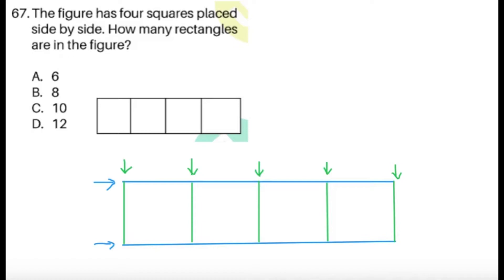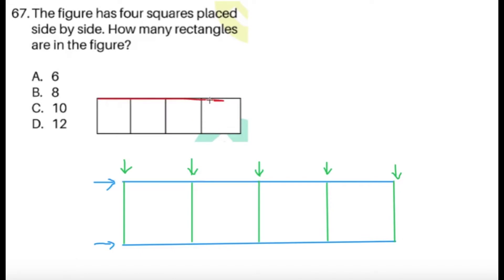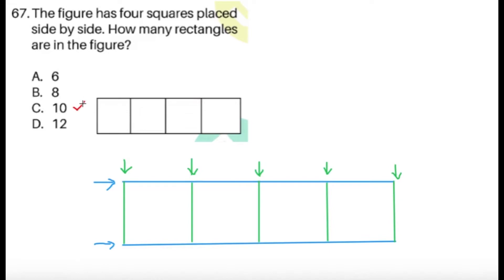Next, question 67. The figure has four squares placed side by side. How many rectangles are in the figure? We can try to list all of them: 1, 2, 3, 4, 5, 6, 7, 8, 9, and for the 10th one we have the entire thing. So we get 10. But we might miss some cases — the answer might be 12. From counting we get 10, so we can cross out choices A and B. We just have to decide: is it 10 or 12?